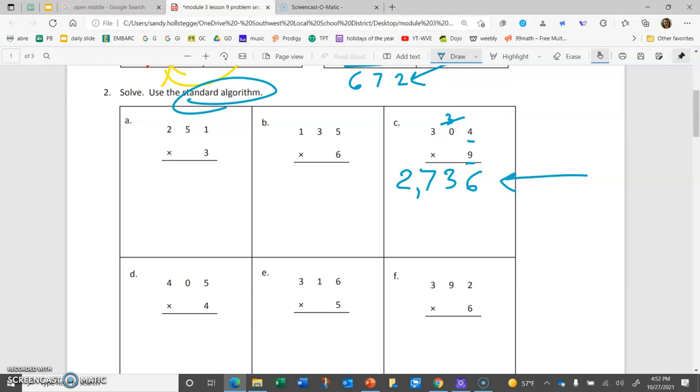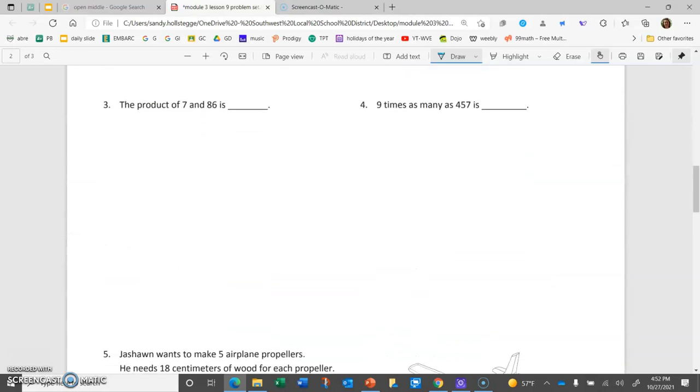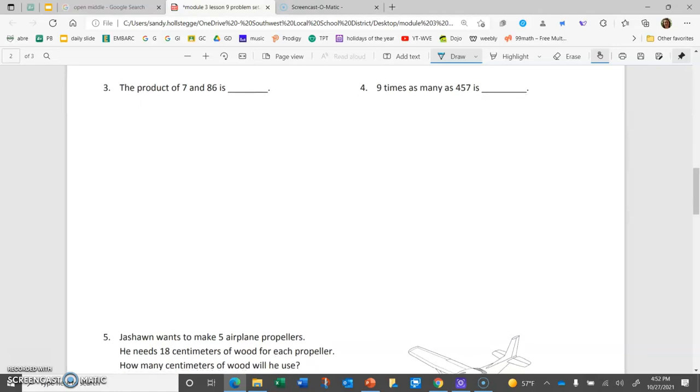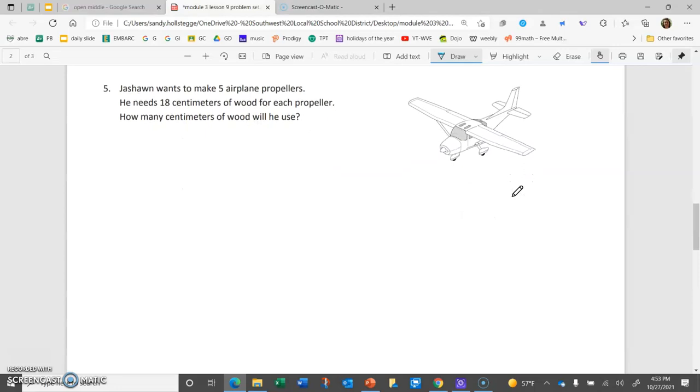So, I think you'll be ready to try those on your own. But, before we proceed, I'd like to go ahead and take a look at the next page and see how these problems are worded a little bit differently. For number 3, when it asks for the product of 7 and 86, that's asking you to multiply to get the answer. Number 4, 9 times as many as 457 means 9 times 457 or 457 times 9.